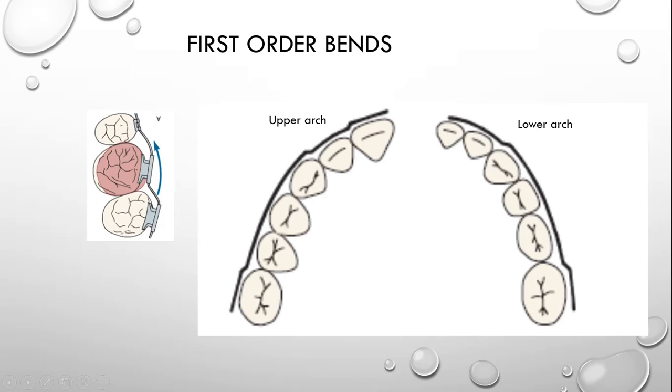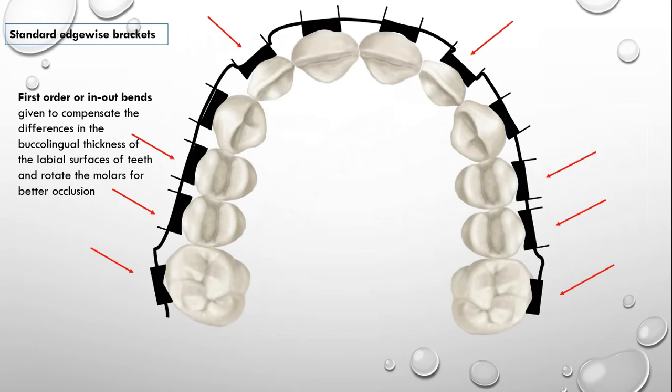But what about contemporary edgewise appliance, also known as straight wire appliance? The name shows that wire should go straight and with that straight wire at the finishing stage of orthodontic treatment, you should get ideal occlusion. How do you achieve that with contemporary braces? In contemporary edgewise brackets, the thickness of the brackets are modified.